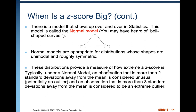Typically, under a normal model, an observation that is more than two standard deviations away from the mean is considered unusual — it's potentially an outlier that you need to look at. An observation that is more than three standard deviations away from the mean is definitely an outlier and could possibly be considered an extreme outlier.